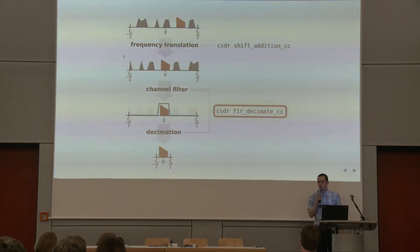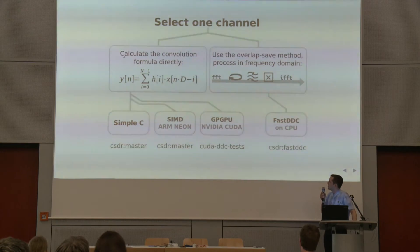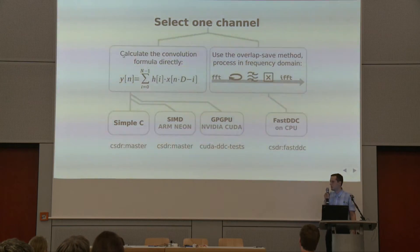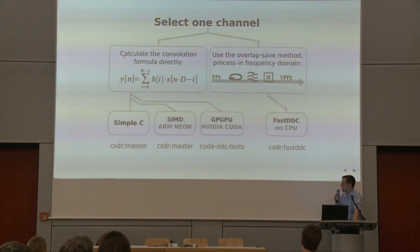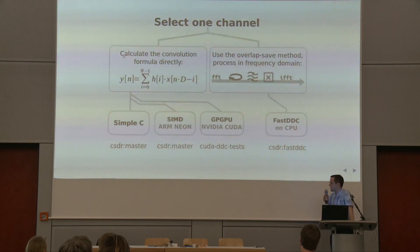These are the CSDR commands that do these operations, and that's the one that takes the most CPU time — so I worked a lot on this. There are multiple ways to select one channel out of the IQ signal: the first is calculating the convolution directly to run the finite impulse response filter, and the other way is processing in the frequency domain, which is what Phil was already talking about. I also made an implementation of that running on CPU; the HPSDR developers did it for the GPU, and they call it DFC.